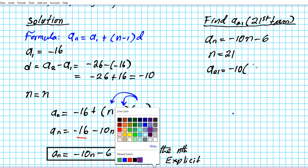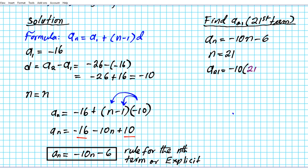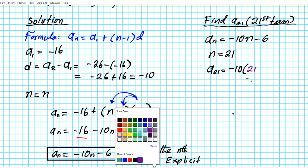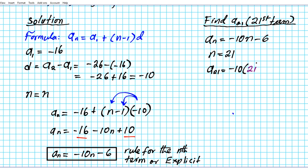So a₂₁ is going to be negative 10 times 21 minus 6. Multiply it out: we have negative 210 minus 6. Signs are the same, you add and keep the sign. That gives us negative 216 as the 21st term.